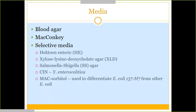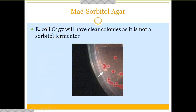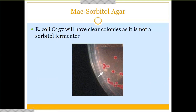There is also a specialized form of MacConkey agar called MacConkey Sorbitol, used to differentiate E. coli O157:H7 from regular E. coli. When E. coli O157:H7 grows on it, colonies are clear, whereas regular E. coli produces purple-colored colonies. So when you see clear colonies, those are the ones to work up as potential O157:H7.